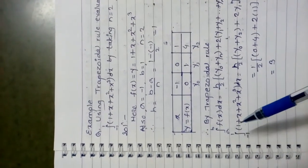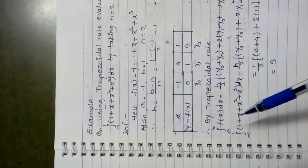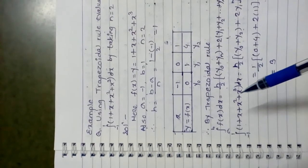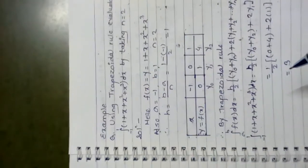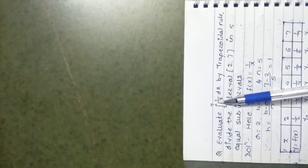Therefore, the integral from -1 to 1 of (1 + x + x² + x³) dx = 3. Now let us take one more example of the trapezoidal rule: evaluate the integral from 2 to 7 of (1/x) dx by the trapezoidal rule, dividing the interval [2, 7] into 5 equal sub-intervals.